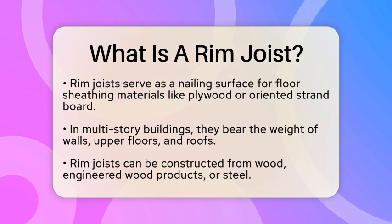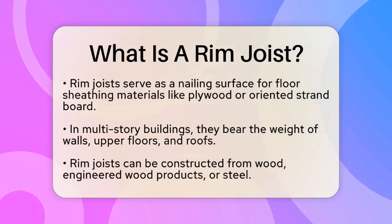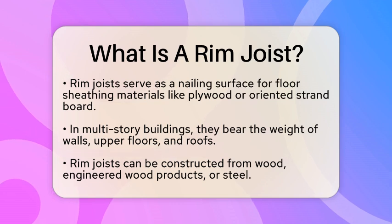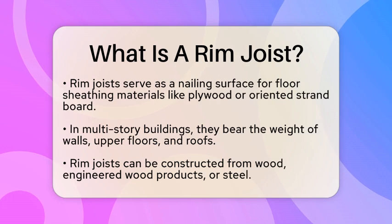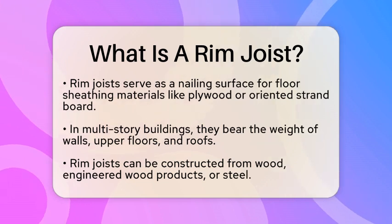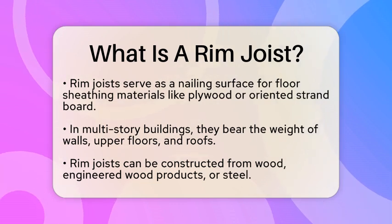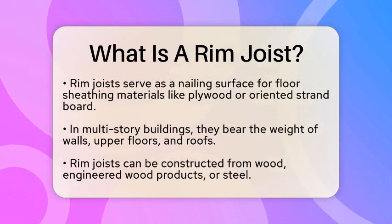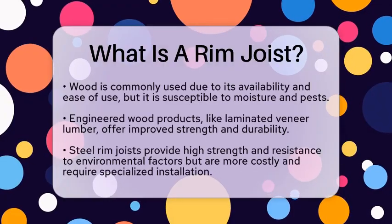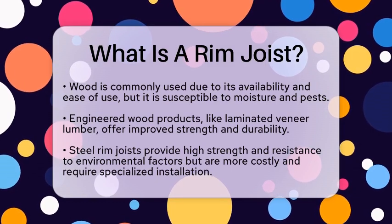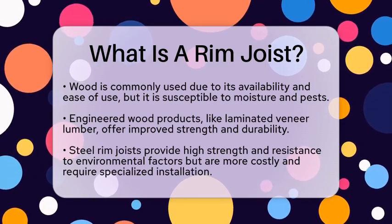Rim Joists can be made from various materials, including wood, engineered wood products, or steel. Wood is commonly used because it is readily available and easy to work with; however, it can be prone to moisture damage and pests. Engineered wood products, such as laminated veneer lumber, offer enhanced strength and durability. Steel Rim Joists provide superior strength and resistance to environmental factors, but they tend to be more expensive and require specialized installation.